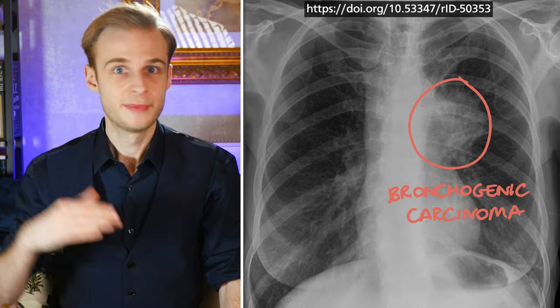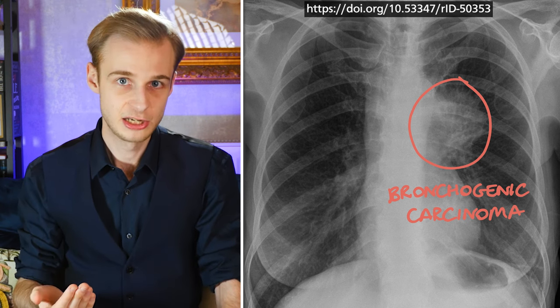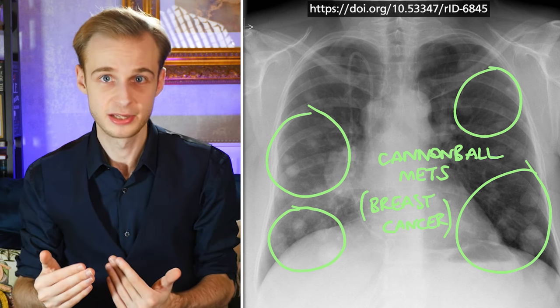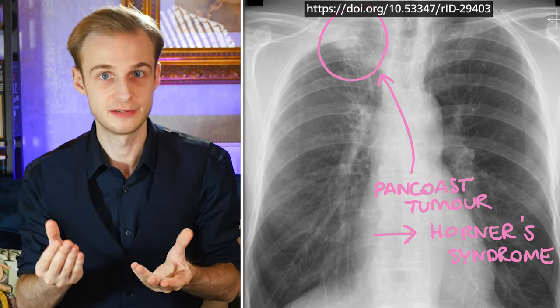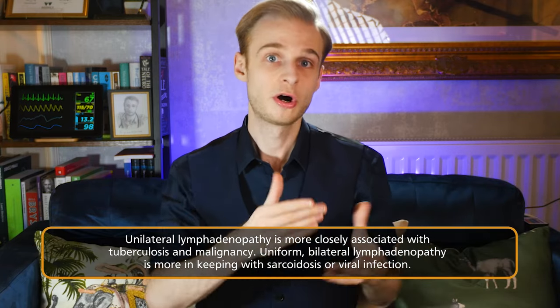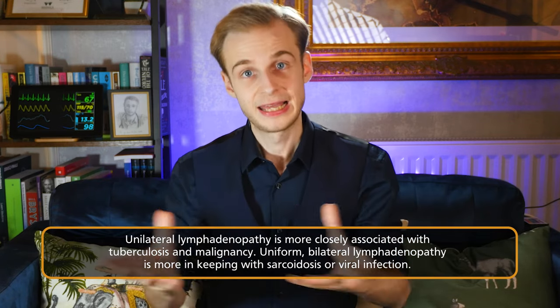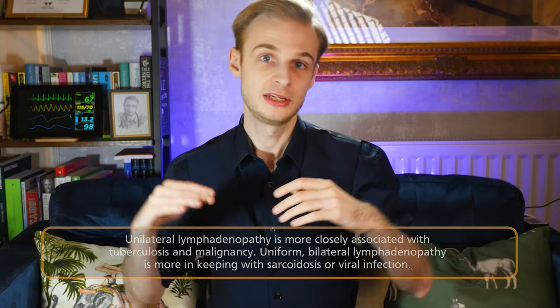Finally, number 10: lung cancer. Cancers are one of the most important things to pick up any time we do a chest x-ray. Different types of cancer — adenocarcinomas, squamous cell carcinomas — can have characteristically different appearances depending on the malignancy. You may see very obvious unilateral opacities and areas of attenuation, small nodules, or more vague areas of consolidation. You may see enlarged lymph nodes more commonly on one side than both. Don't forget to check the ribs for areas of bony destruction if you've got an invasive lesion. On lymphadenopathy: unilateral enlarged lymph nodes are more commonly associated with cancer or tuberculosis, whereas bilateral and uniform symmetrical lymphadenopathy should make you think about sarcoidosis or a viral infection.